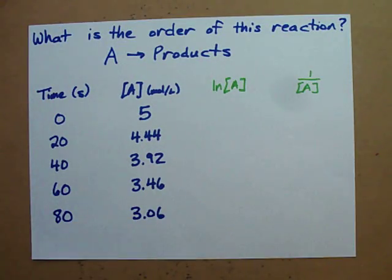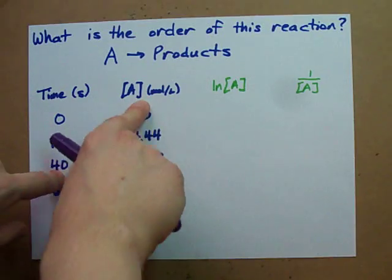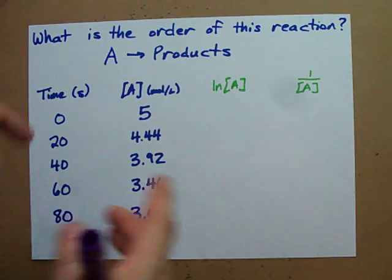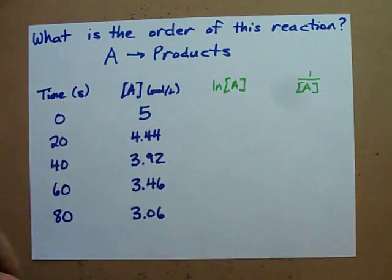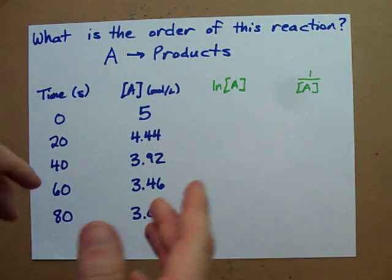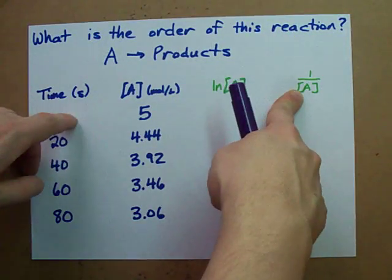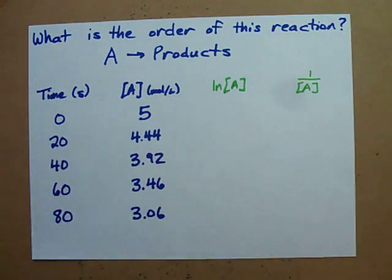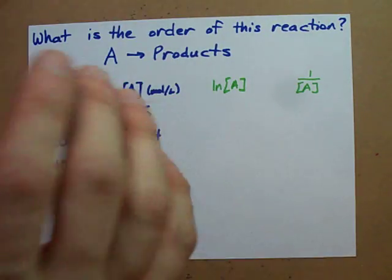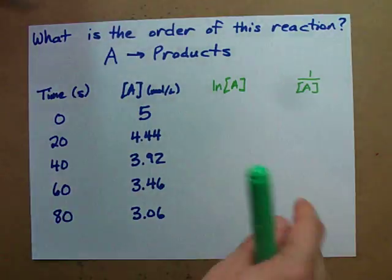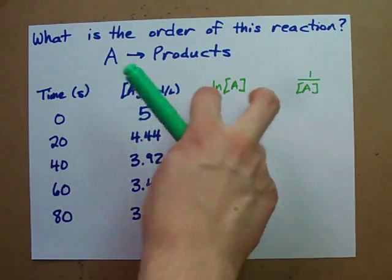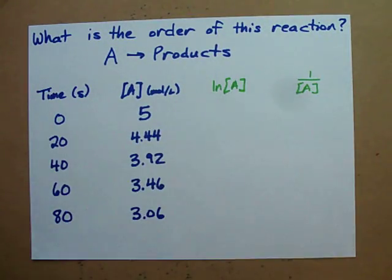Some teachers want you to make a graph of [A] versus time, another graph of ln[A] versus time, and a graph of 1/[A] versus time, and then just see which one is linear. That's way too much work. Instead, just make yourself two new columns: ln[A] and 1/[A].